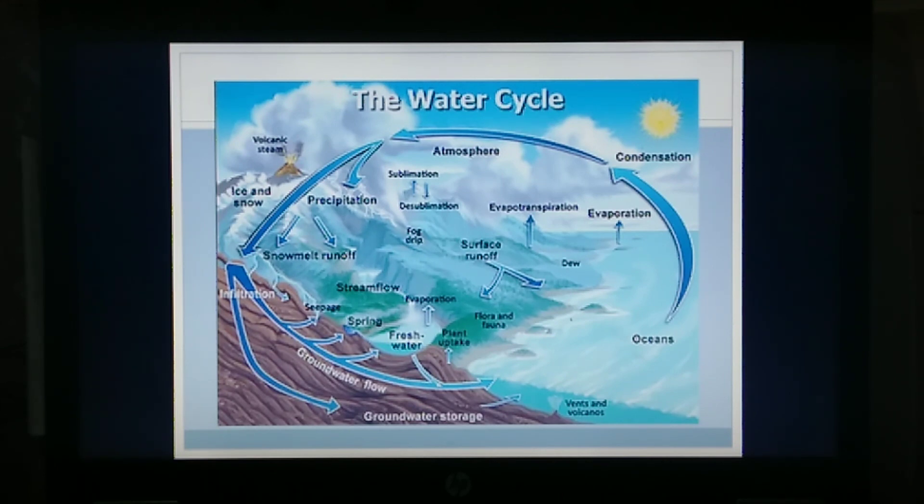Saltwater accounts for 97.5% of this amount, whereas freshwater accounts for only 2.5%. Of this freshwater, 68.9% is in the form of ice and permanent snow cover in the Arctic, the Antarctic, and mountain glaciers.